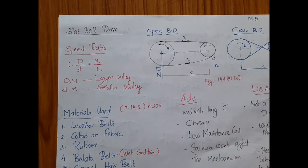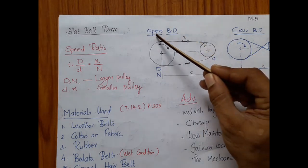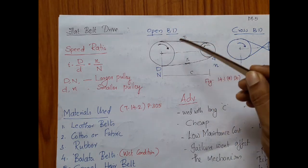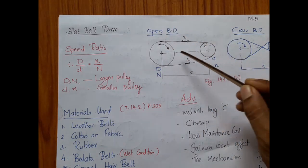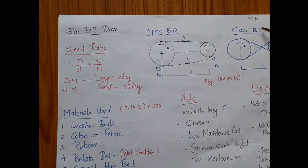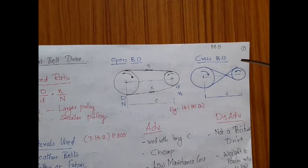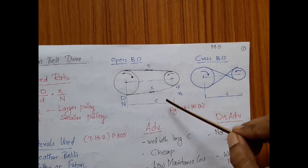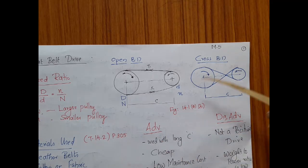The belt drive comes in two different configurations: one is the open type and second one is the cross type. In the open type, both pulleys will be rotating in the same direction. In the case of crossed belt drive, the pulleys will be rotating in opposite directions. The center distance is given by the letter capital C, and this figure is available in your data handbook, figure number 14.1a and 14.1b.